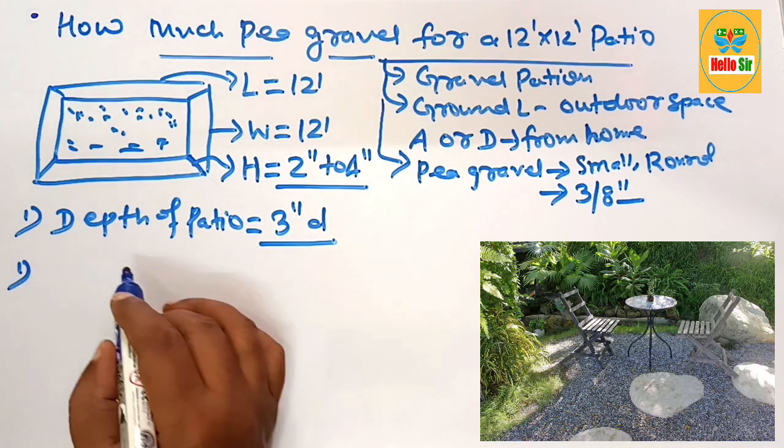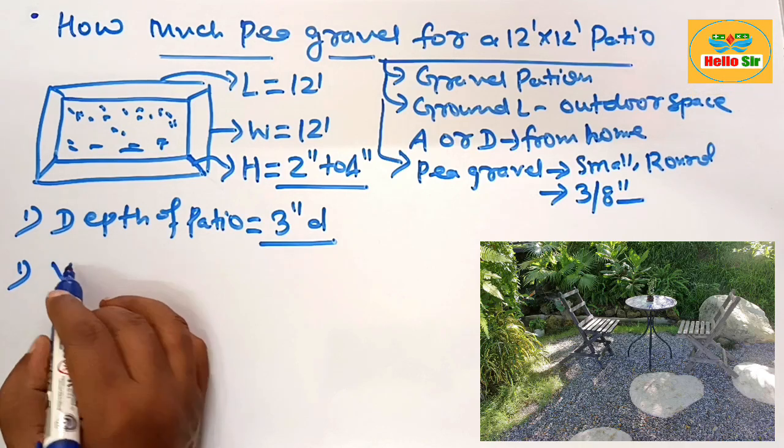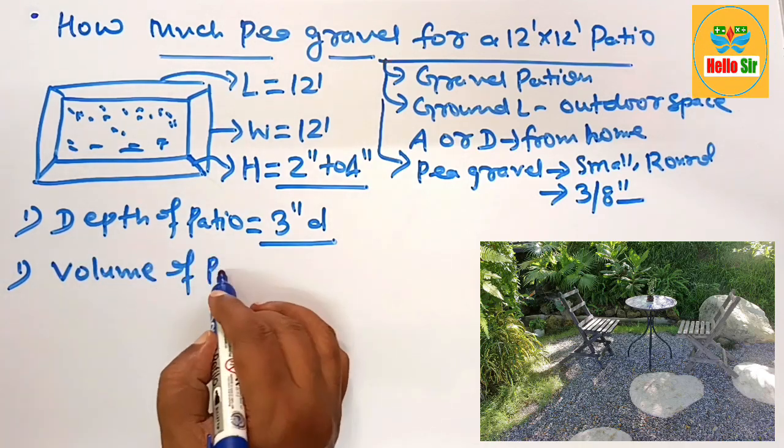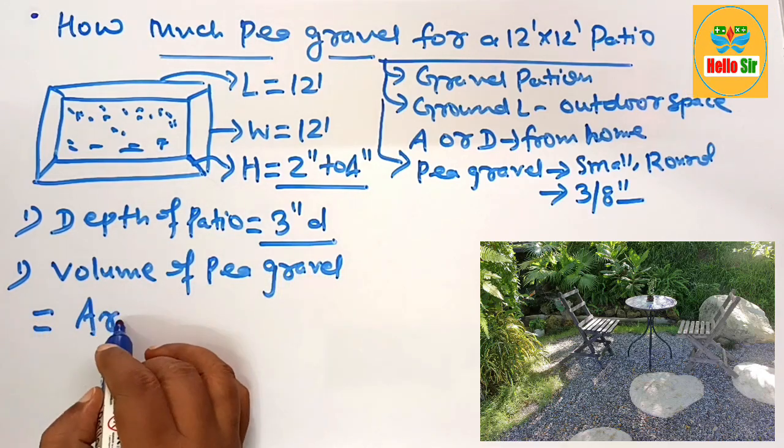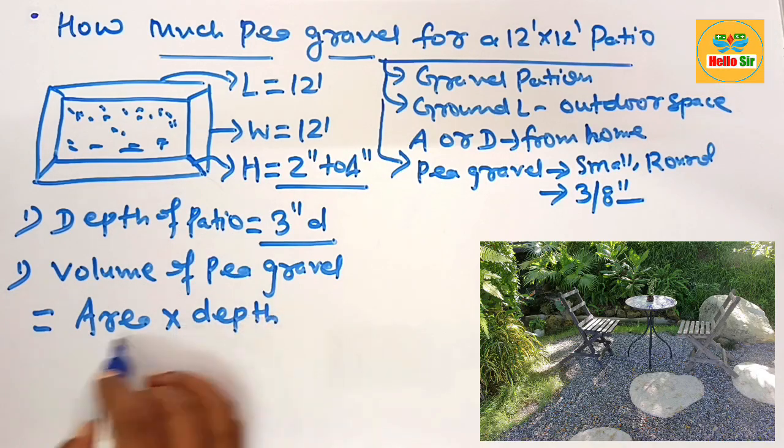How we figure out the amount of gravel? You calculate the volume of pea gravel. How we calculate? You multiply the area and the depth.